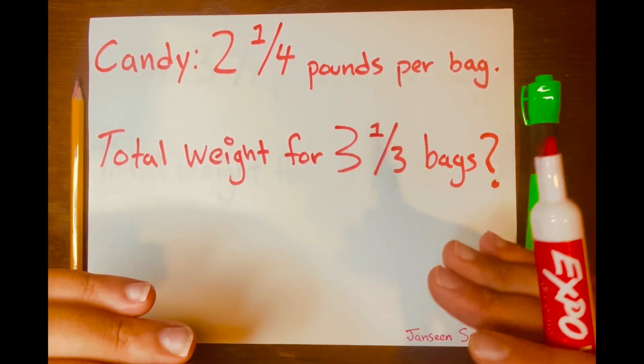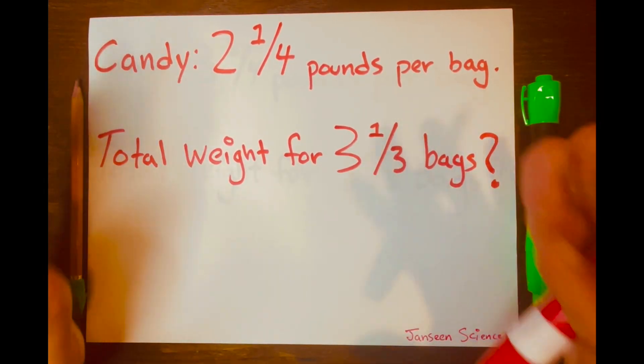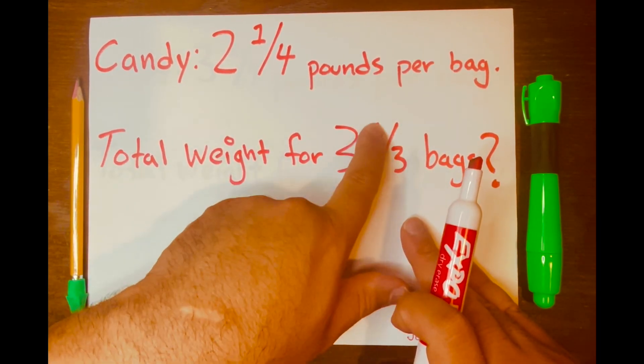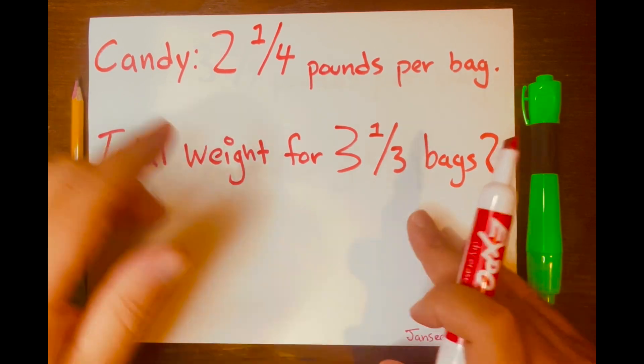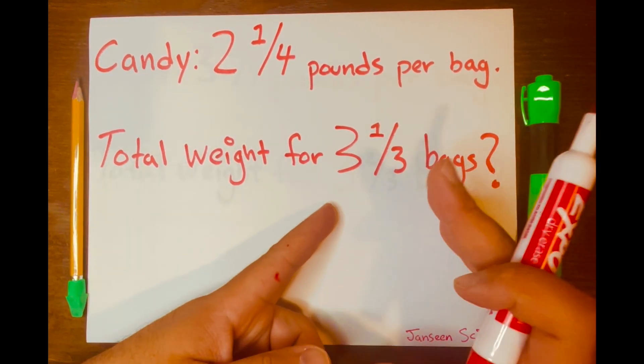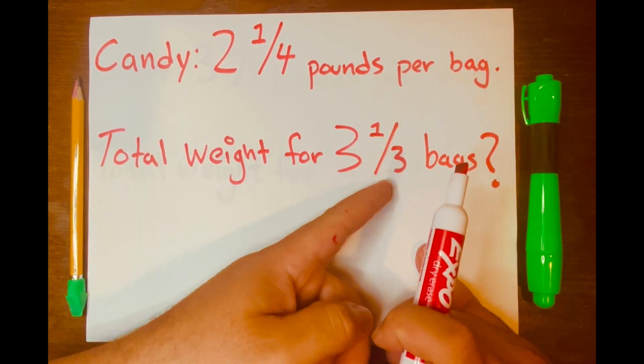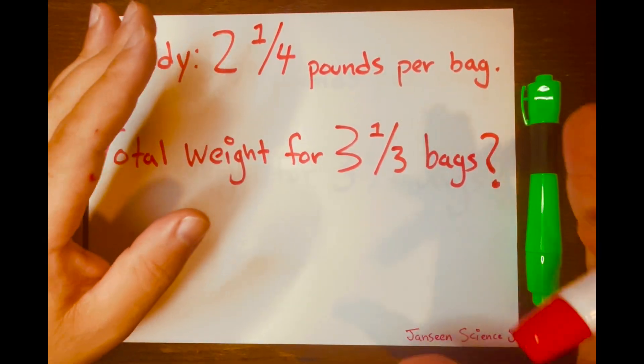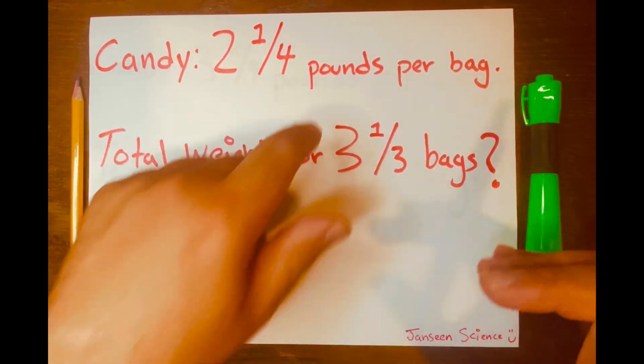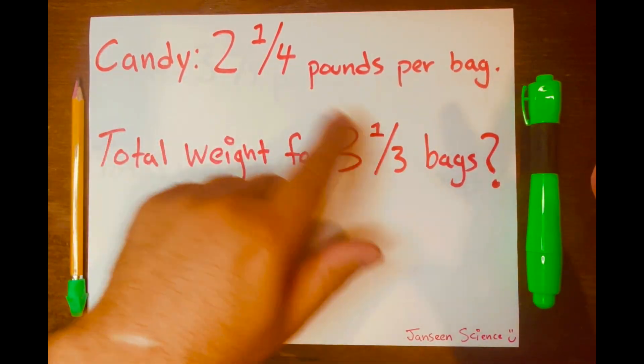So what is the total weight of all your candy? To solve this problem, we want to find out the total weight of three and one-third bags. We know that's the total amount of bags, three and one-third, and each bag weighs two and one-fourth pounds. So we just have to multiply both mixed numbers.